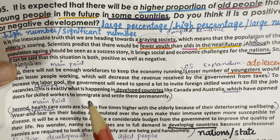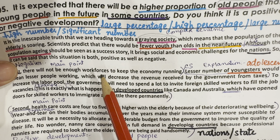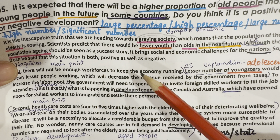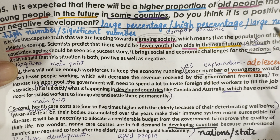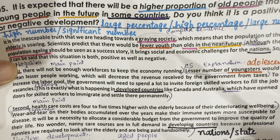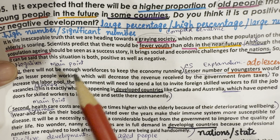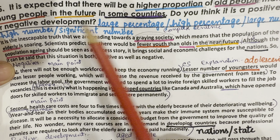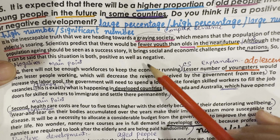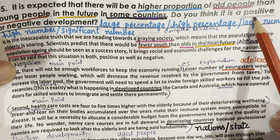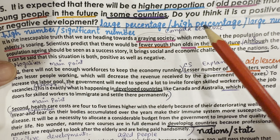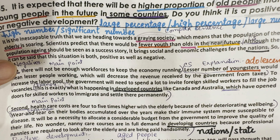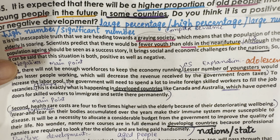The examiner must understand what you think. Don't just repeat 'higher proportion' and 'old people' — use topic-related vocabulary words and synonyms. To impress the examiner: your accuracy must be high, spelling mistakes should not happen, simple sentences should not be used, complex sentences should be used, conditional sentences and compound sentences should be used, and topic-related vocabulary words and synonyms should be used.